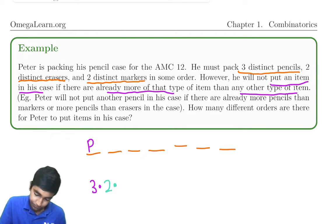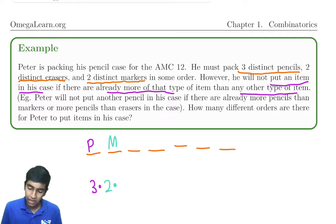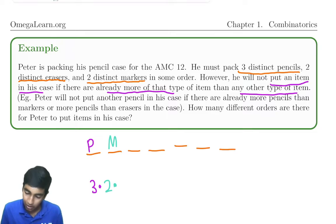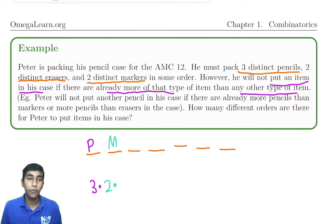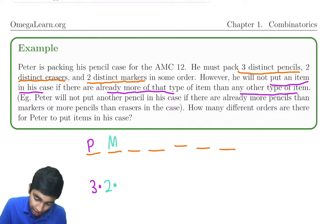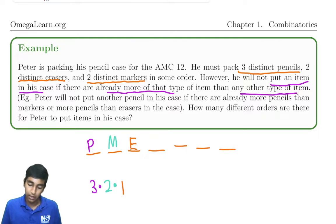Let's say we chose a marker. Now for the third item, if we put another pencil or marker, that won't work — for example, another marker would mean two markers and zero erasers. So this one has to be the remaining third type of item to even out the count. That gives just one choice — whatever item is left.